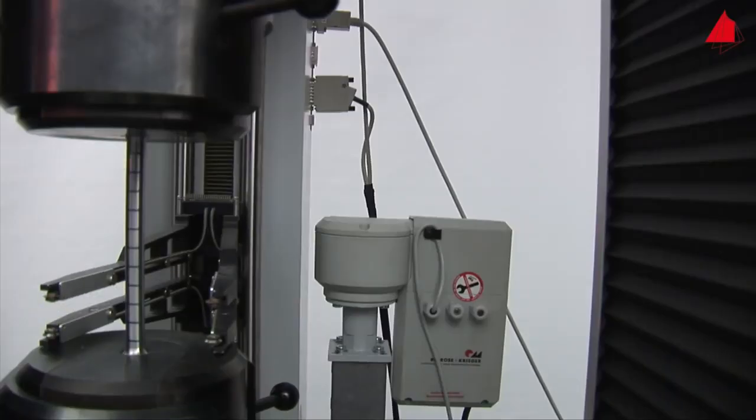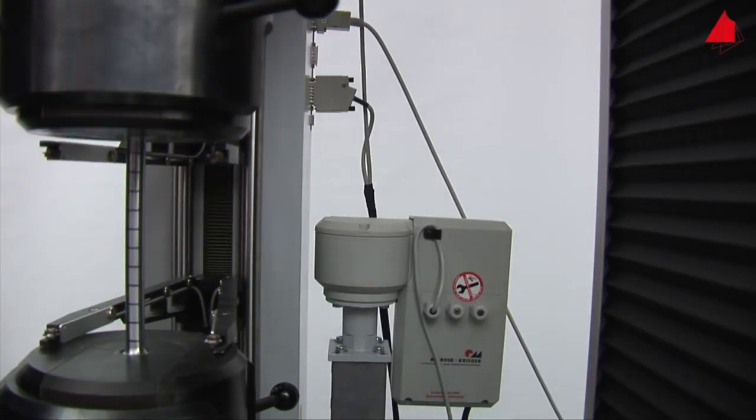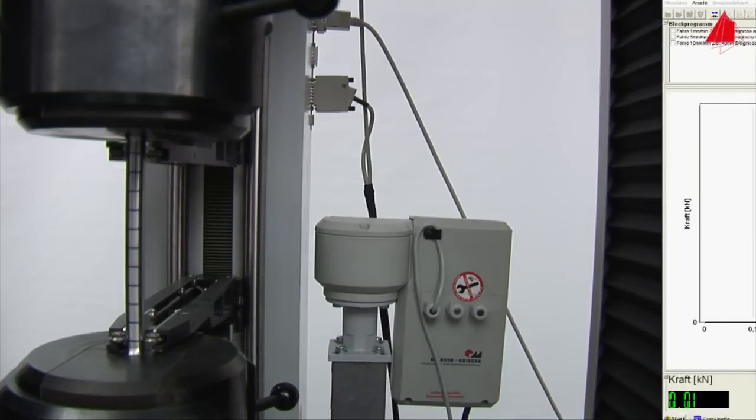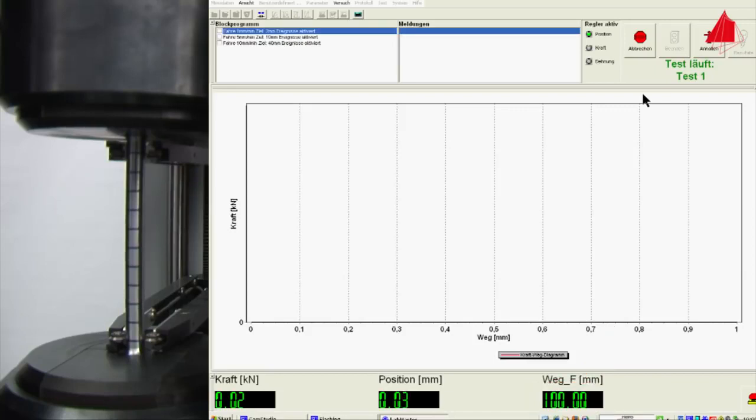Ready. The test starts and the extensometer sensor arms are carefully pressed onto the test piece. This way the gauge length can be measured throughout the whole tensile test. The gauge length is displayed at the bottom right hand corner of the screen. At the beginning it amounts to 100 millimeters.